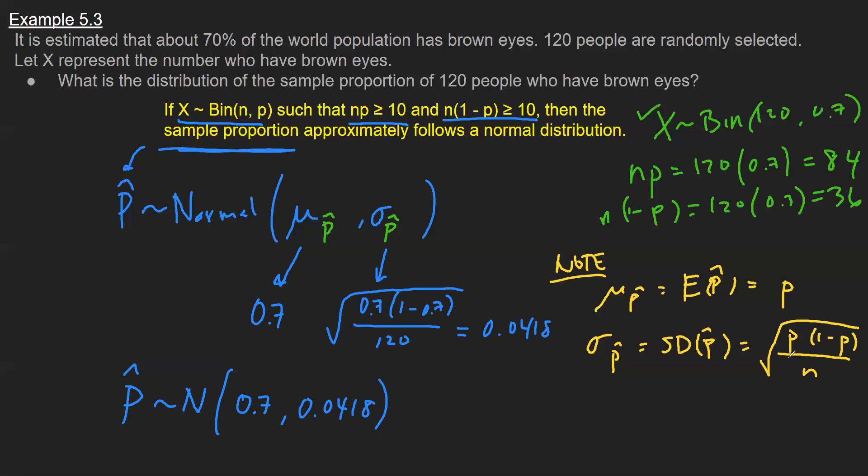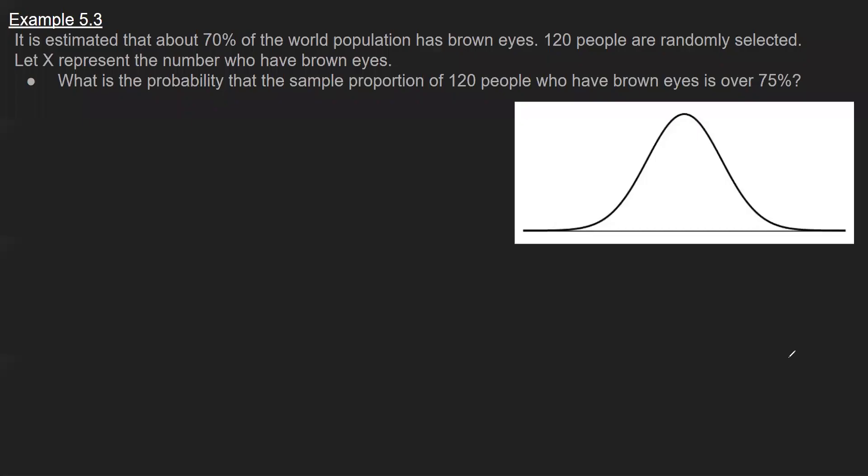Now that we know the distribution of p hat, we can estimate probabilities. That brings us to this last probability question. We've determined that p hat is in fact normal with mean 0.7, standard deviation 0.0418. So I've got this bell curve here. The x-axis are the sample proportions, centered right at 0.7.